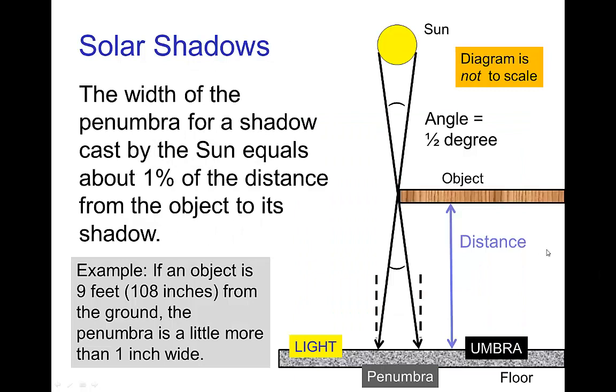Now if you want to estimate the size of a penumbra, you can make use of the fact that the sun makes an angle of about a half a degree in the sky. And with a little geometry, you discover that this means that the width of a penumbra is going to be about one percent of the distance between the object and its shadow.